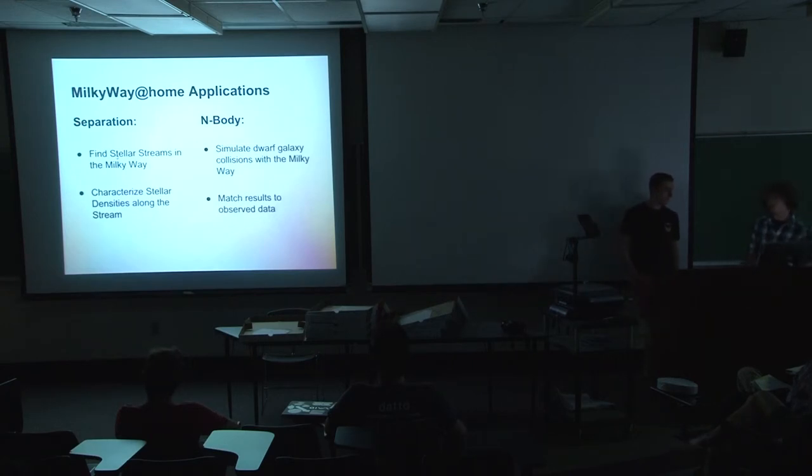So like I said, we have two applications currently running on Milky Way@Home. The first one is separation, which we used to find those stellar streams I pointed out in the first slide. But basically we have to characterize their densities and their positions, so that we can later use them in our n-body application. So the n-body application is a gravitational modeling program, which models the way systems interact in space. We'll go into more about how it works later.